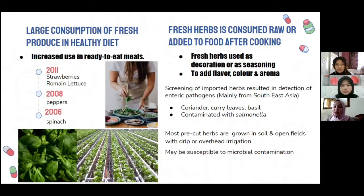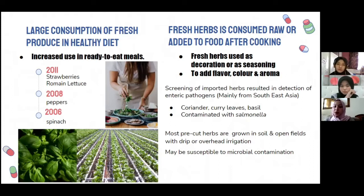What are the causes of Salmonella infection in these herbs? Mainly because pre-cut herbs are grown in soil and open fields with drip or overhead irrigation, which makes them susceptible to microbial contamination and increases the risk of a Salmonella outbreak.